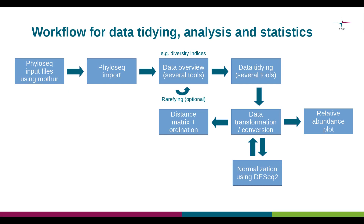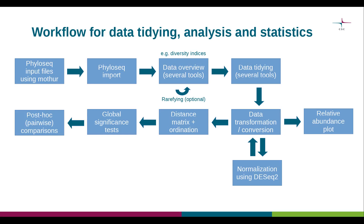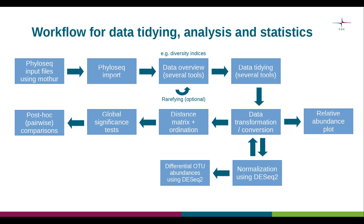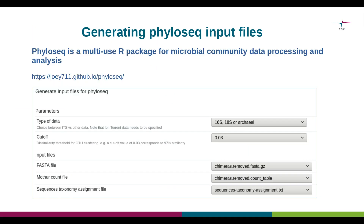Following data transformation, one can compute distance matrices that can be used as the input for multivariate ordinations and significance tests. Multivariate ordinations allow one to visualize variation in microbial community structure using 2D plots. Global significance tests can be used to test for overall differences in community structure. If the test results are significant, they can be followed up by further tests that enable pairwise comparisons — in other words, to determine where exactly the differences revealed by a global test can be found. Finally, it is possible to perform OTU differential abundance comparisons using DESeq2.